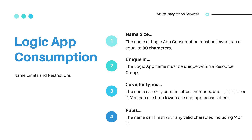The name can only contain letters, numbers, and dashes, parentheses, underscores, or dots. The Logic App name must be unique within a resource group. You can use both lowercase and uppercase letters. The name can finish with any valid character, including dashes or underscores.